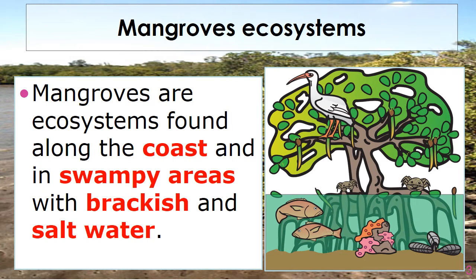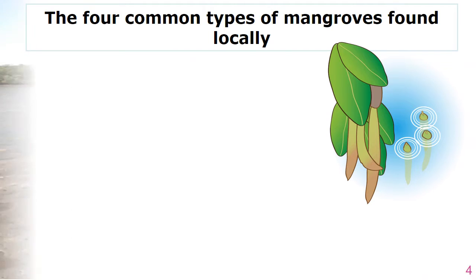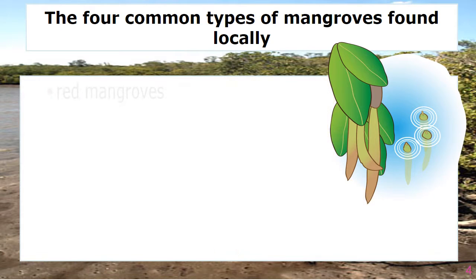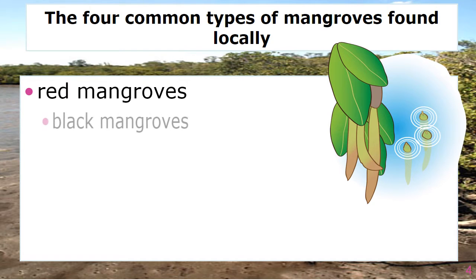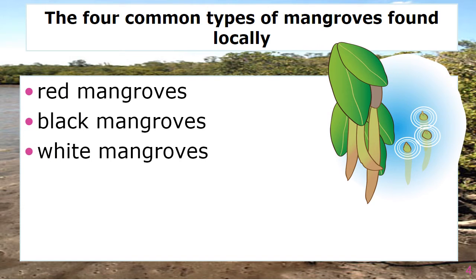Mangrove ecosystem. Mangroves are ecosystems found along the coast and in swampy areas with brackish and salt water. Let's look at the four common types of mangroves found locally: first is the red mangrove, next will be the black mangroves, third will be the white mangroves, and fourth will be the buttonwood.